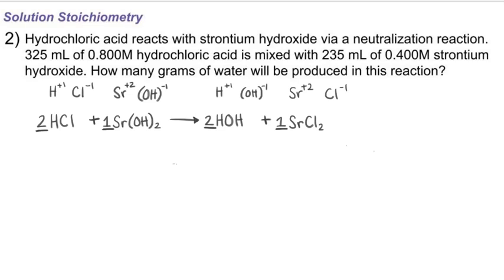It tells me that I have 325 milliliters of 0.8 molar hydrochloric acid, and it's mixed with a separate amount - 235 milliliters of 0.40 molar strontium hydroxide. I have two amounts of reactants separately, which means this is a limiting reactant problem. I'm going to have to figure out which amount of reactant is the limiting reactant, and then after I do that, I can figure out what is my theoretical yield in grams of water, which is what the problem is asking for.